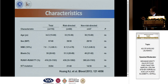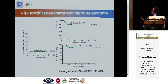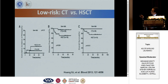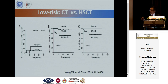For risk-directed patients — high-risk receiving transplantation and low-risk receiving chemotherapy — the relapse rate was very low and disease-free survival was quite high. For low-risk patients who received chemotherapy, disease-free survival was nearly 100%. But for low-risk patients who underwent transplantation, disease-free survival was actually poor. So low-risk patients benefit from chemotherapy, not transplantation.